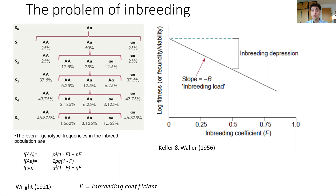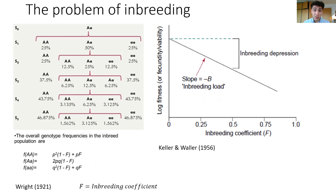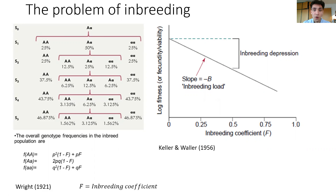It's also worth pointing out that inbred populations have much lower effective population sizes, simply because inbreeding is a highly non-random process — mating becomes highly non-random, which decreases the effective population size. That means genetic drift is more important, and that means that deleterious mutations can accumulate more easily in these populations. So there are a couple of different reasons why we would expect highly inbred populations to be less fit and more likely to go extinct over time.